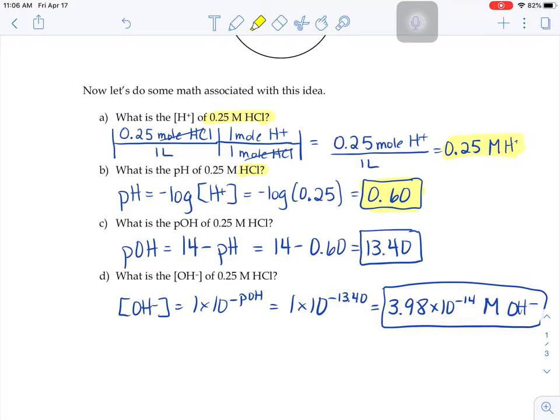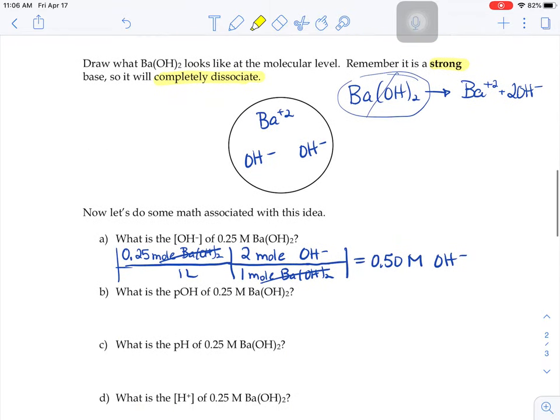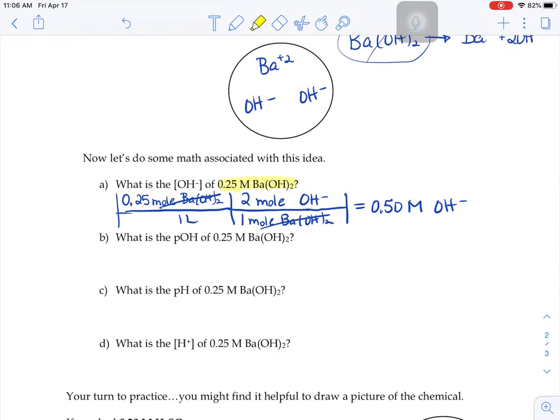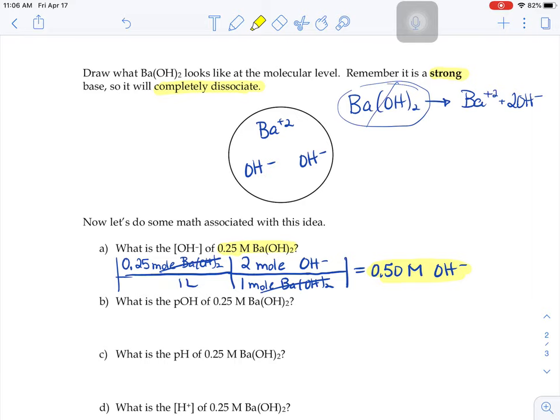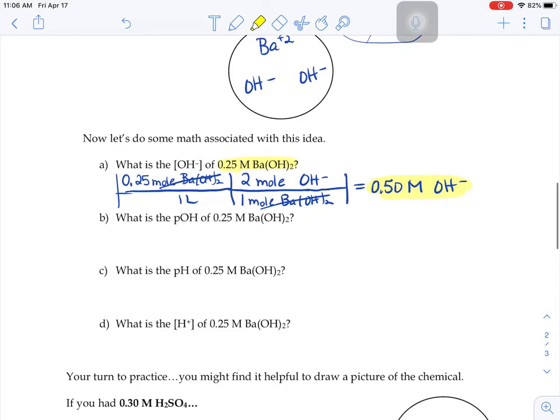That's not the case in this problem, because the molarity of the solution and the molarity of the ion are different. That's because every time a barium hydroxide dissociates, we get two OHs per barium hydroxide. So the molarity of the ions isn't going to match the molarity of the solution.